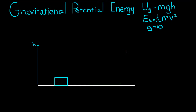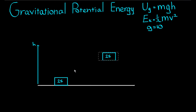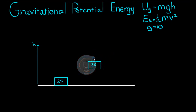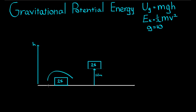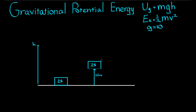Let's see how much energy it takes to lift a TV off the ground. Say we have a TV of mass 25 kilograms, and we decide to lift it 1.1 meters off the ground. How much energy would it take to lift it at a constant speed so it comes to rest 1.1 meters above the ground?